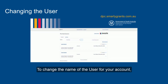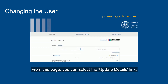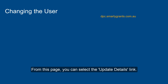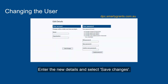To change the name of the user for your account, log into your account and select My Submissions. From this page, you can select the Update Details link. Enter the new details and select Save Changes.